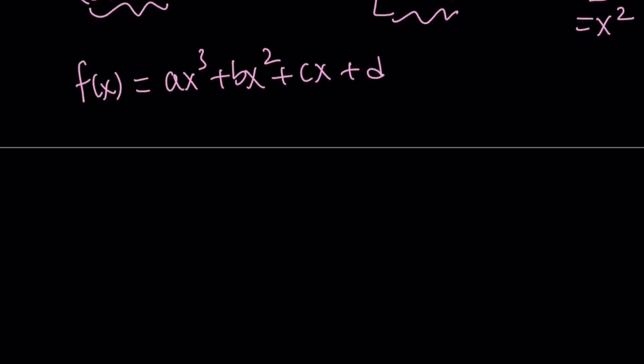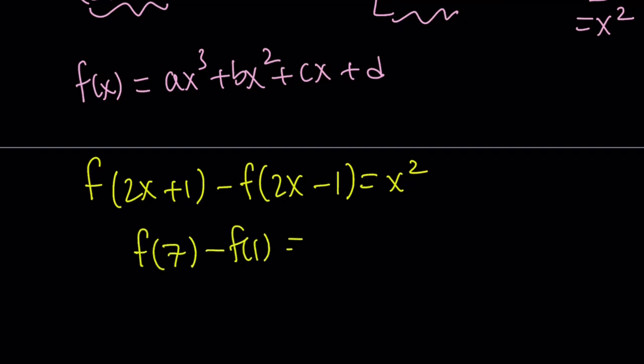So one more time, I'm going to write the equation. So I have f of 2x plus 1 minus f of 2x minus 1 equals x squared. And I need to find f of 7 minus f of 1. Now, if they asked us for f of 7 minus maybe f of something else, you could find it easily. But here's the thing. One thing I want you to notice, that 7 and 1 are both odd numbers.